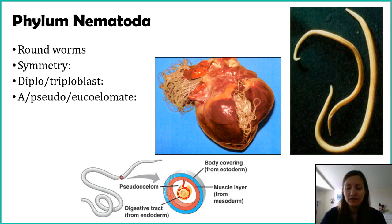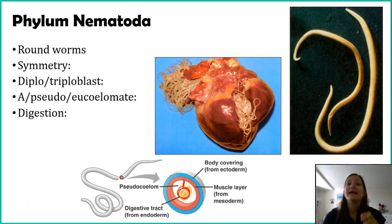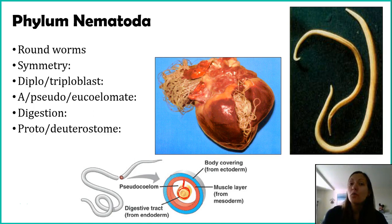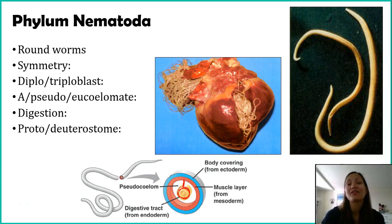Digestion is getting a little more advanced with these organisms. Nematodes have complete digestion — one end of the worm is the mouth and the other end is the anus, giving us two openings for the ingestion of food and the excretion of waste. And remember from our phylogenetic tree, we are with the protostomes — proto meaning first, stome referring to mouth. So when this organism is developing, it forms the mouth side of its digestive tract first, then the anus.